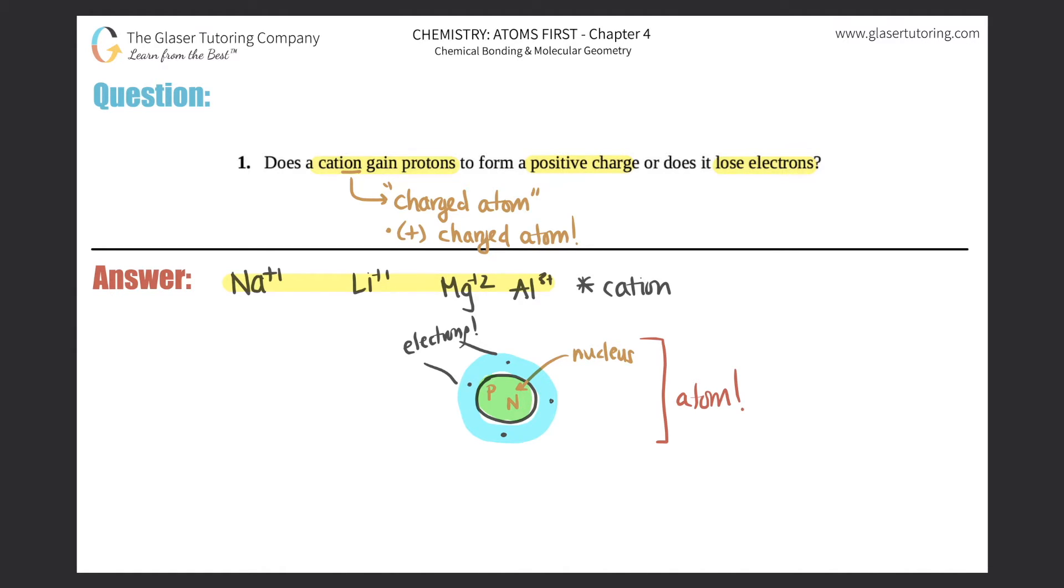It would be much easier to deal with electrons because they're farther out of the atom. If you tried to gain and lose protons, which are plus charges, it would be so hard.